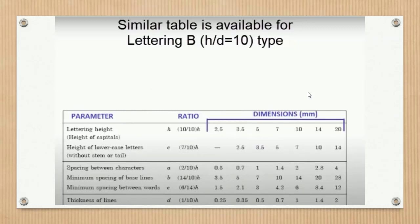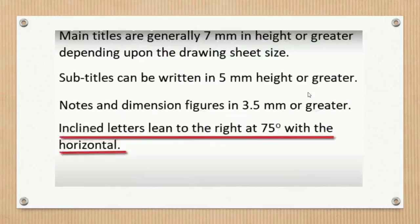Lettering is generally done in capital letters with different sizes for different purposes. Main titles are written in 6 mm to 8 mm size, subtitles in 3 mm to 6 mm size, while notes, dimensions, and figures are in 3 mm to 5 mm size. Drawing numbers in the title block are 10 mm to 12 mm. Main titles are generally 7 mm or greater depending on the drawing sheet size; subtitles can be 5 mm or greater; notes and dimension figures are 3.5 mm or greater.